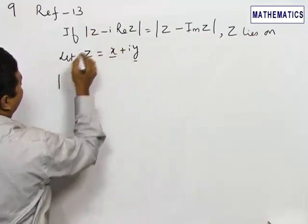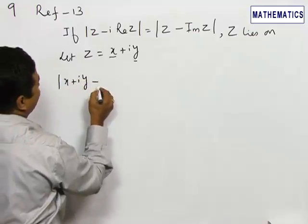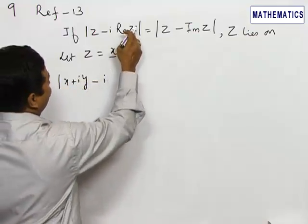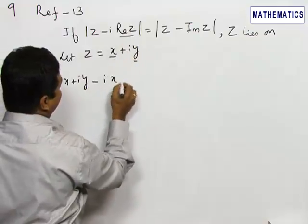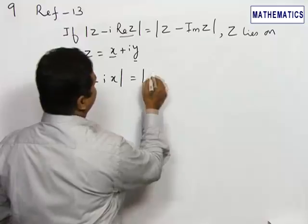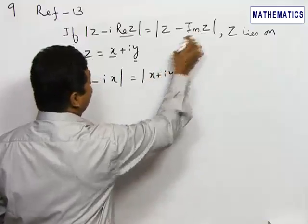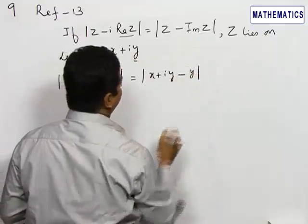Instead of z, we will write the given condition as x plus iy. So modulus of x plus iy minus i times (instead of real of z, I can write x), close the modulus. That is, for z, we can also replace with x plus iy minus (here imaginary of z, we write merely y, not with i).